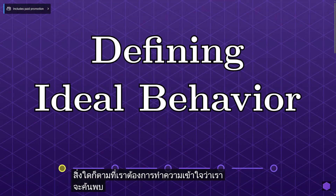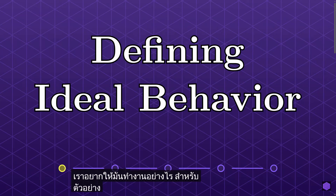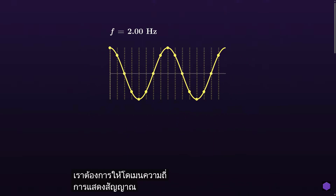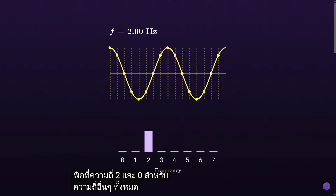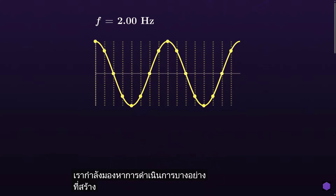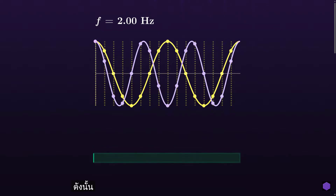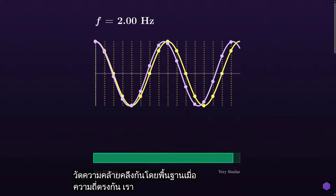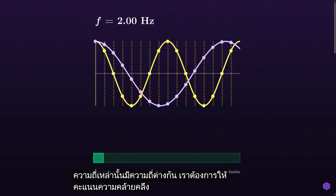Whenever we want to understand how we might rediscover a complex idea, it really helps to have an understanding of how we would like it to behave for some simple examples. Suppose we have a cosine wave of frequency 2 Hz. Ideally, the frequency domain representation of such a signal should be a peak at frequency 2 and zeros for all other frequencies. So we're looking for some operation that produces a high value for an input frequency of 2 and zeros for all other frequencies — fundamentally, a measure of similarity. When the frequencies match, we should get a high similarity score; when they differ, we ideally want a score of zero.